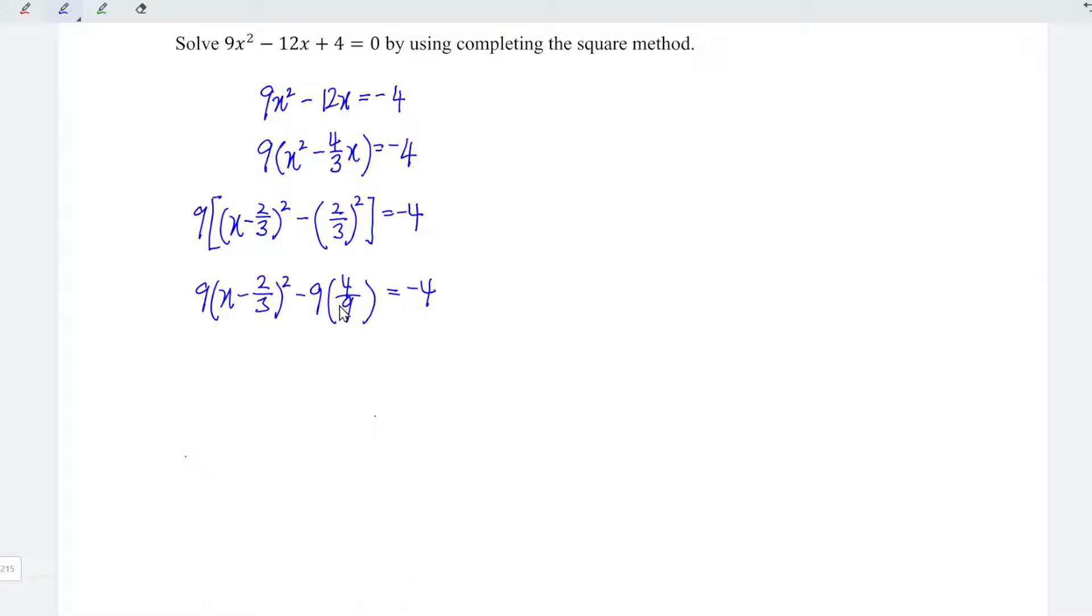Again, constant bring to the right. So we have 9(x - 2/3)² = -4. Minus move over plus. 9 cancel with 9, so we left only 4. So -4 + 4 = 0.